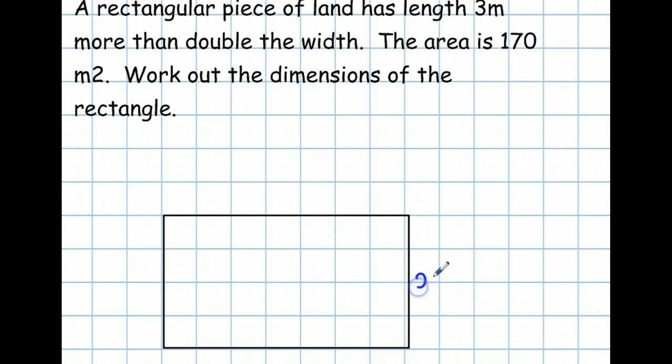So if I let x equal the width, then double the width is 2x. And 3 metres more than that is plus 3. And I'm told that the area is 170 metres squared. And we're already picking up some marks here. Just to translate what these words in English mean into algebra.